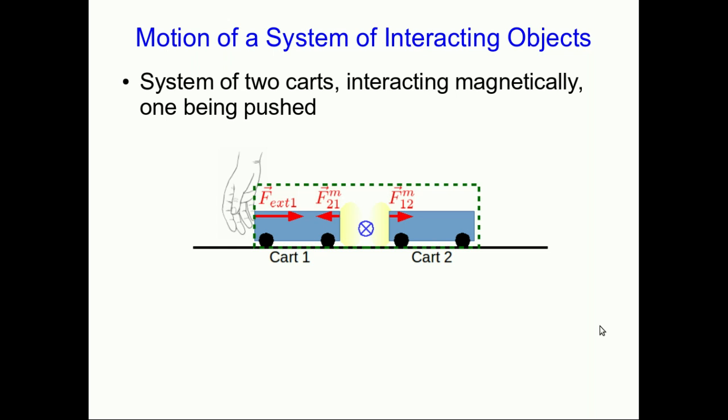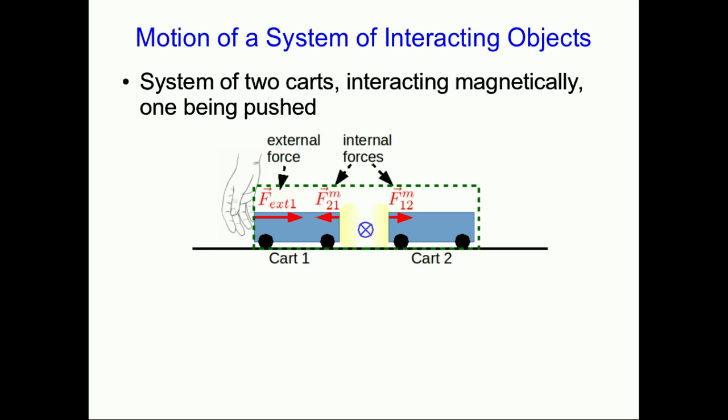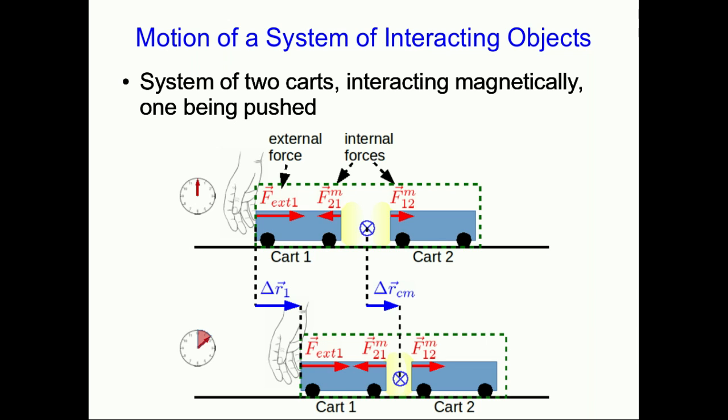Let's now use Newton's third law to draw a few more conclusions about interacting systems of objects. In particular, let's look at a pair of objects that are interacting with each other but where there's also some external interaction, so this will not be an isolated system. Here is a system of two carts. They're interacting magnetically, but one is also being pushed. The magnetic forces that they exert on each other are internal forces occurring within the system, but the force exerted on one cart by the hand is an external force coming from the environment.